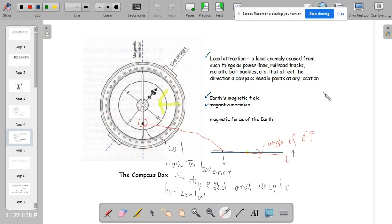When you say local attraction, these are things like the power lines, railroad tracks, metallic belt buckles, etc. that can affect the direction of a compass needle points at any location. And also, the Earth's magnetic field is pulling you downward.